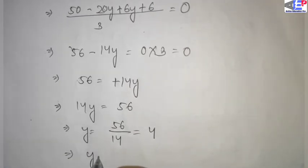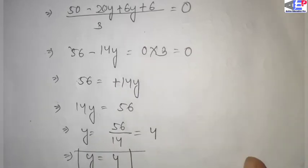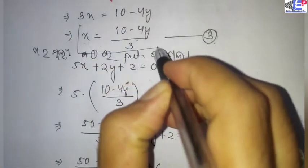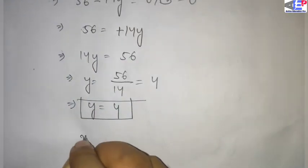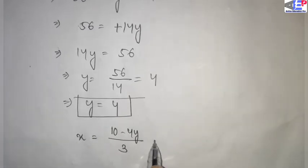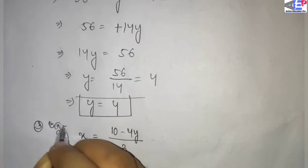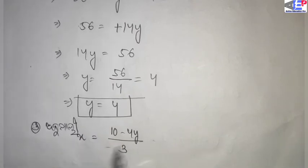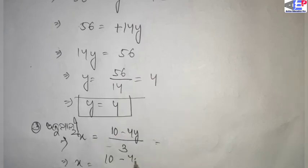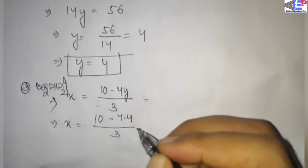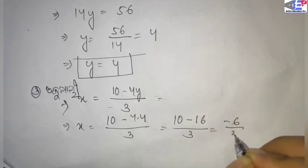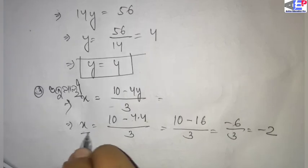Y is equal to 4. So x is equal to 10 minus 4y by 3, which is 10 minus 4 times 4 by 3. This gives us 10 minus 16, which is minus 6 by 3, equal to minus 2. So x is equal to minus 2.